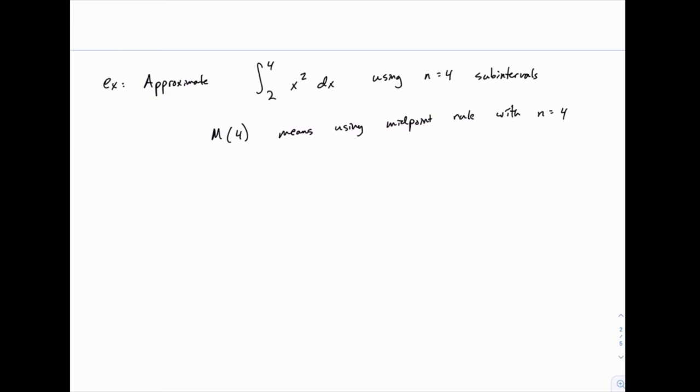Similarly for the trapezoidal rule, you might see T of 4, for instance. So notationally that just means use the trapezoidal rule with, for instance, 4 sub-intervals. So here we're going to divide the interval from 2 to 4 into 4 sections.